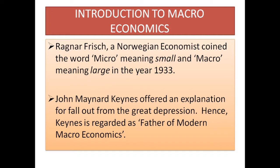John Maynard Keynes, in his book The General Theory of Employment, Interest and Money, published in the year 1936, offered an explanation for the fallout from the Great Depression. That is why he was called the father of modern macroeconomics.